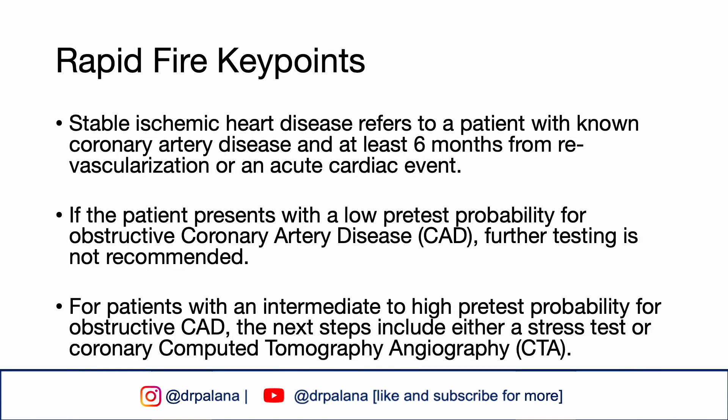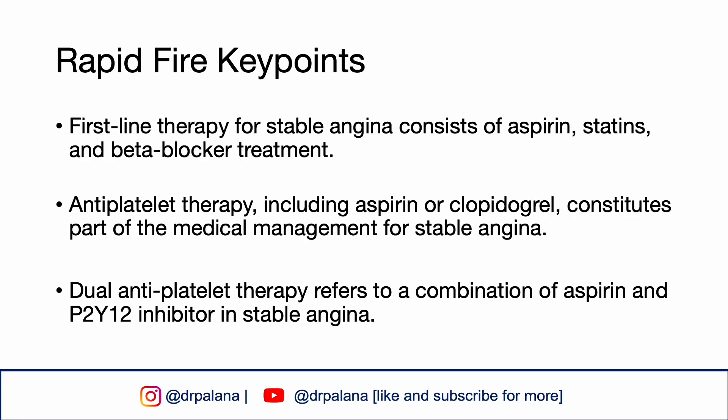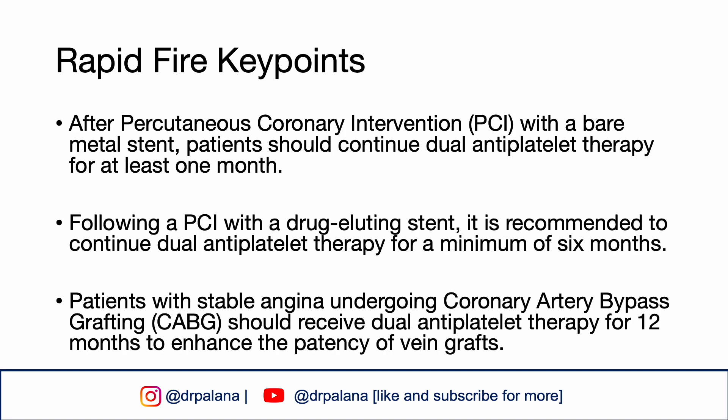Here are some rapid-fire key points. Stable ischemic heart disease refers to a patient with known coronary artery disease at least six months from revascularization or an acute cardiac event. If the patient presents with a low pretest probability for obstructive CAD, further testing is not recommended. For patients with intermediate to high pretest probability, the next steps include either a stress test or coronary CTA. The first-line therapy for stable angina consists of aspirin, statins, and beta blocker treatment. Antiplatelet therapy — including aspirin or clopidogrel — constitutes part of the medical management. Dual antiplatelet therapy refers to a combination of aspirin and a P2Y12 inhibitor such as clopidogrel. After PCI with a bare metal stent, continue dual antiplatelet therapy for at least one month.